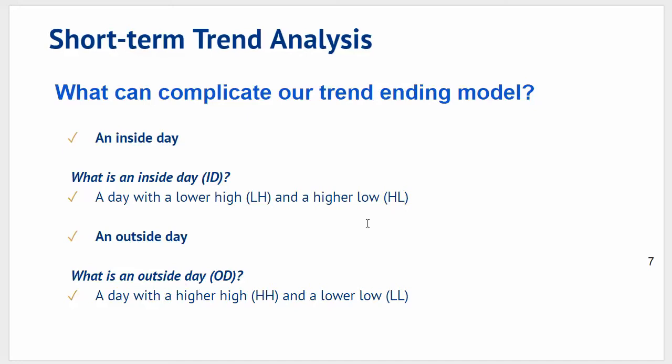So what are the types of bars that can complicate our trend ending model? Those types of bars are what are known as inside bars or outside bars — sometimes called inside days and outside days. That terminology is quite specific to the time frame being examined, so let's call them an inside bar and an outside bar.